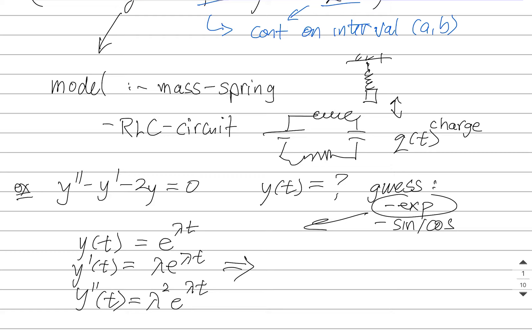So if I were to take all of this information and plug it into that differential equation, here's what I'll get. I'll end up with lambda squared e to the lambda t, subtract lambda e to the lambda t, subtract 2 e to the lambda t, and I would like to know if that's zero.